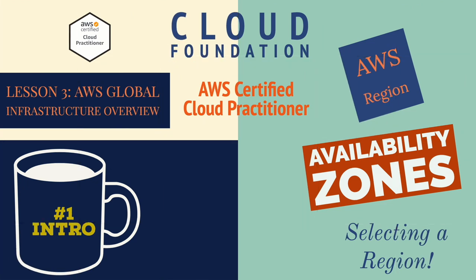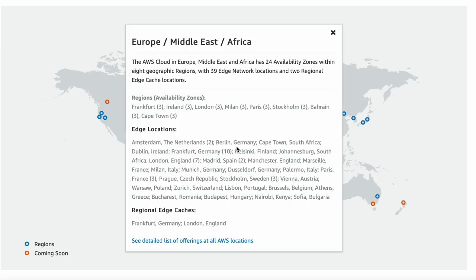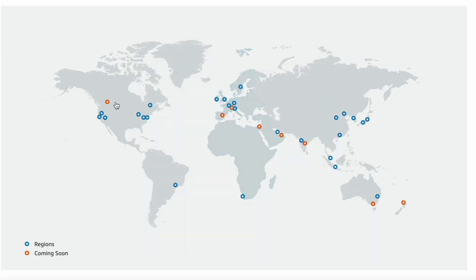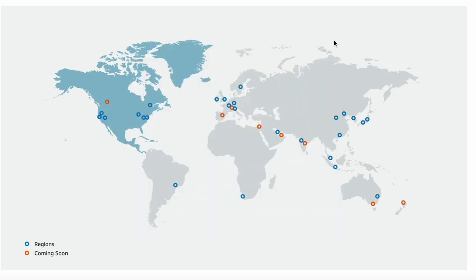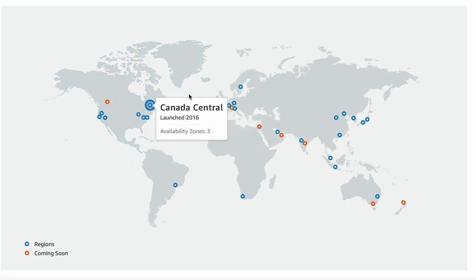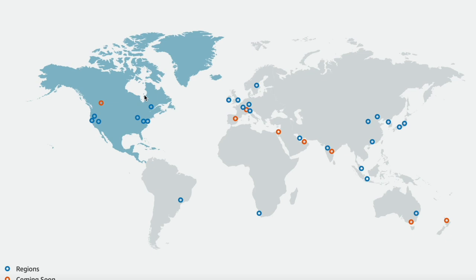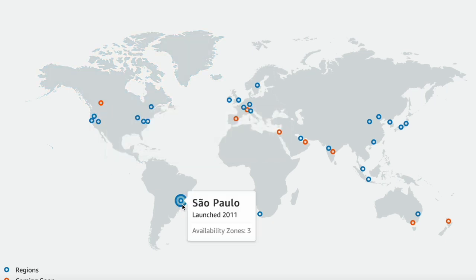Welcome back to Lesson 3: AWS Global Infrastructure. Let's understand the global infrastructure of AWS by looking at the AWS global infrastructure map. You can select a circle on the map to view summary information about that region, view the regions and availability zones, or choose a tab to view a map of a selected geography along with a list of regions, edge locations, local zones, and regional caches.